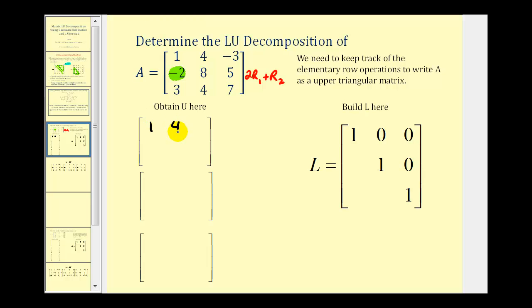The first row stays the same. For the second row: two times one plus negative two is zero; two times four plus eight is sixteen; and two times negative three plus five is negative one. The third row stays the same. For this row operation, our multiplier was positive two, which helped us obtain a zero in row two, column one. Looking at our lower triangular matrix at row two, column one, this element is going to be the opposite of our multiplier — the opposite of positive two is negative two. We'll always use the opposite of the multiplier to fill the corresponding position in L.